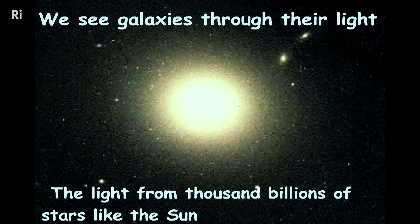The way we see galaxies — what our telescopes collect — and why we invest a lot of money on huge satellites such as James Webb, is because galaxies send us light. This light comes from thousands, billions of stars like the Sun, or different from the Sun. So the problem is: are we able to make a theoretical modeling of this light? This is something we are going to try to show now.